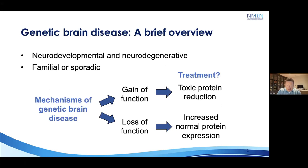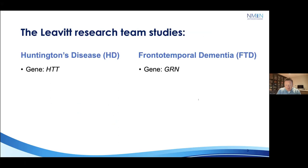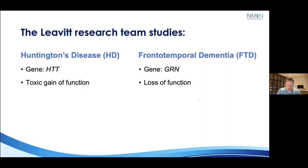With that simplified background, we've been focusing on two different disorders in this program, both representing those two different models of disease mechanism. Huntington's disease is caused by mutations in the Huntingtin gene — specifically an expanded CAG repeat expansion within exon one. Frontotemporal dementia is caused by progranulin mutations in the granulin gene, where even a single mutation leading to loss of function causes an age-dependent dementia. Huntington's disease is a primary example of a toxic gain-of-function disorder, whereas frontotemporal dementia is a hemizygous null situation essentially representing loss of function of progranulin.